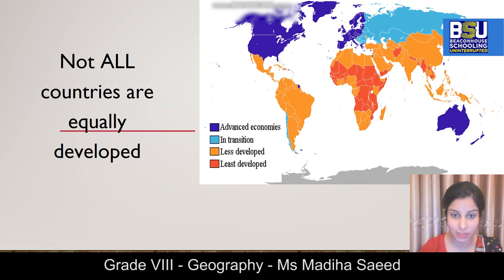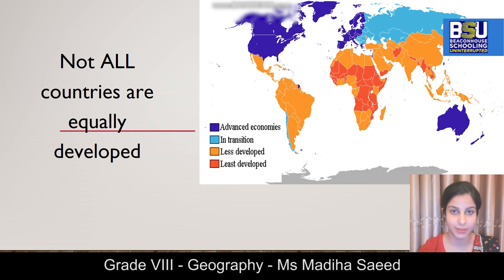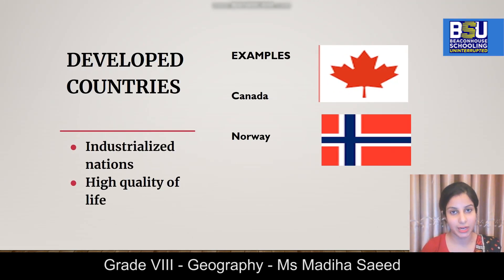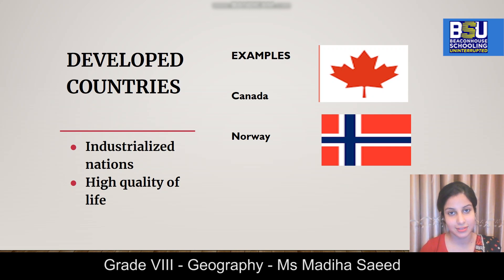The four categories are: advanced, in transition, less developed or developing, and least developed or underdeveloped. Starting with developed countries — a developed country is usually an independent sovereign state that is industrially very advanced and offers a very good quality of life to its citizens. Two examples are Canada and Norway.